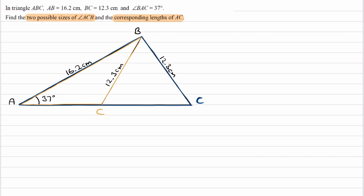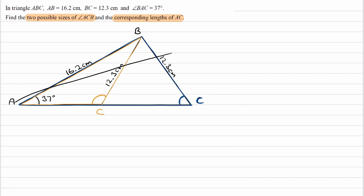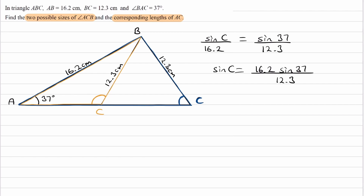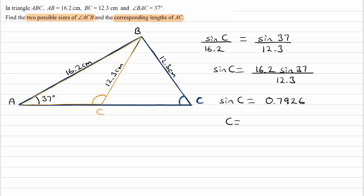We're trying to work out angle ACB — this angle for the blue triangle and this angle for the orange triangle. Starting with the blue triangle: this angle is opposite this side, and this side is opposite this angle. So our sine rule becomes: sine C divided by 16.2 is equal to sine 37 all over 12.3. Rearranging, sine C equals 16.2 times sine 37 all divided by 12.3, which gives 0.7926. So C equals inverse sine of that, which is 52.43 degrees.